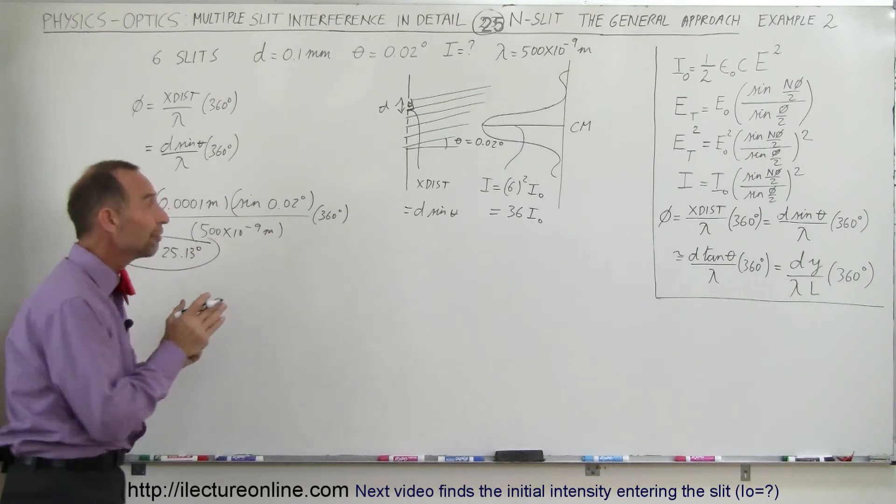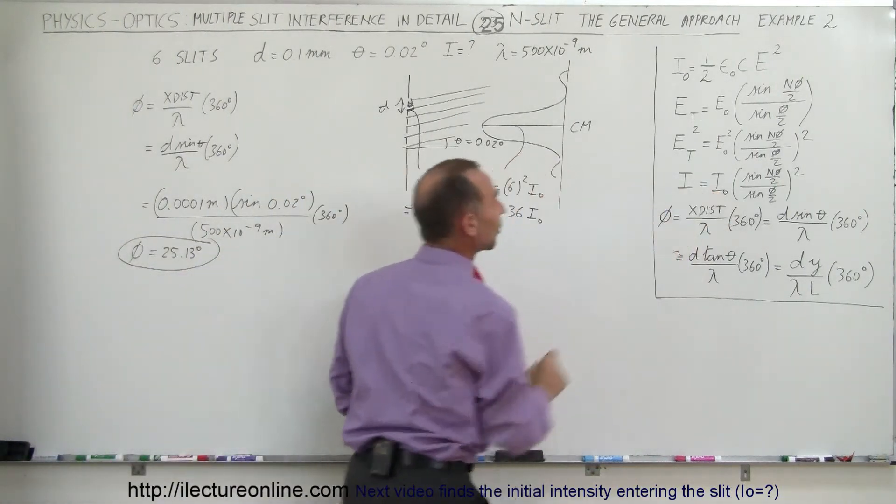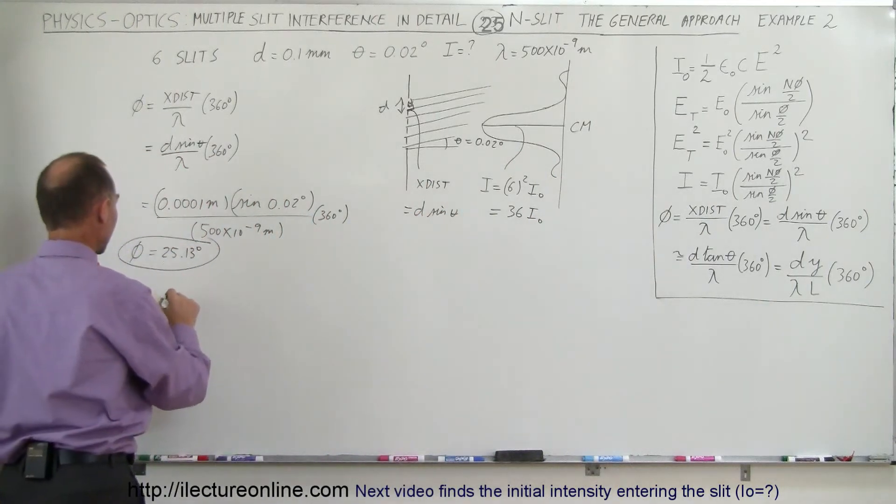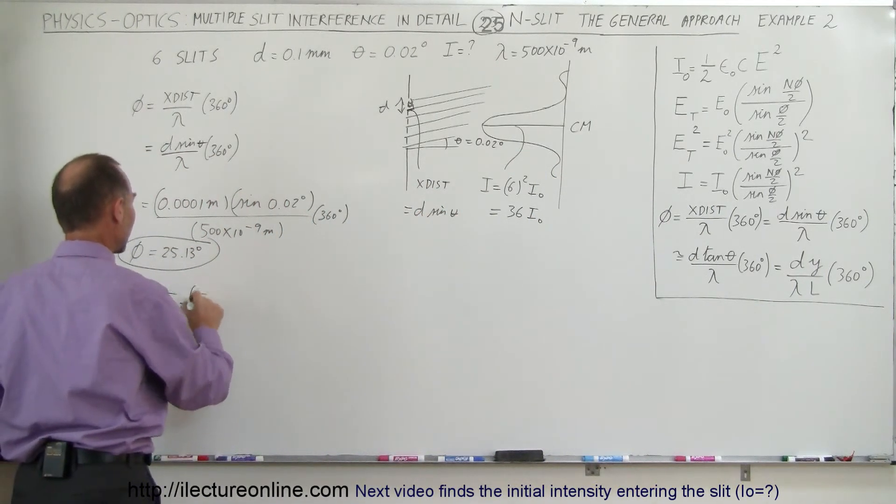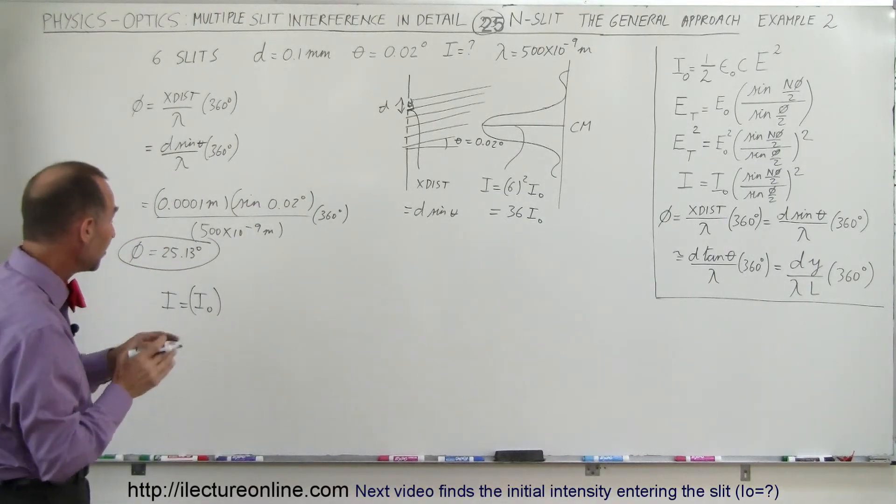Alright, now that we know the phase angle, we should be able to find the intensity simply by using this equation right there. So we can say that the intensity is equal to the initial intensity, or I should say the intensity for a single ray, for a single wave...